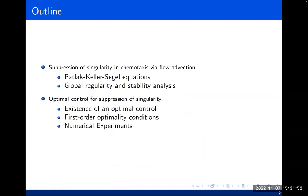Today's talk has two components. First, I'm going to talk about the suppression of singularity in chemotaxis with flow advection, where the mathematical model is described by the Patlak-Keller-Segel equations. I will first talk about global regularity and stability analysis via a semigroup approach in bounded domain before I move to the control problem, which is the second component. The second component focuses on optimal control — how we design the fluid flow for suppression of the singularity in an optimal way. I'll address existence of an optimal control and how we derive the first-order optimality condition.